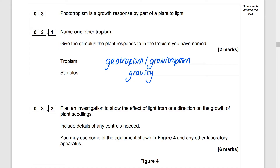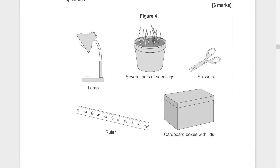Question 3.2: We've got to plan an investigation to show the effect of light from one direction on the growth of plant seedlings, including details of any controls needed. You may use some of the equipment shown in Figure 4 and any other laboratory apparatus. Our independent variable is going to be the direction of light, so we could put some seedlings in a box, put the lid on, and cut a hole in the side to shine the light in one direction.